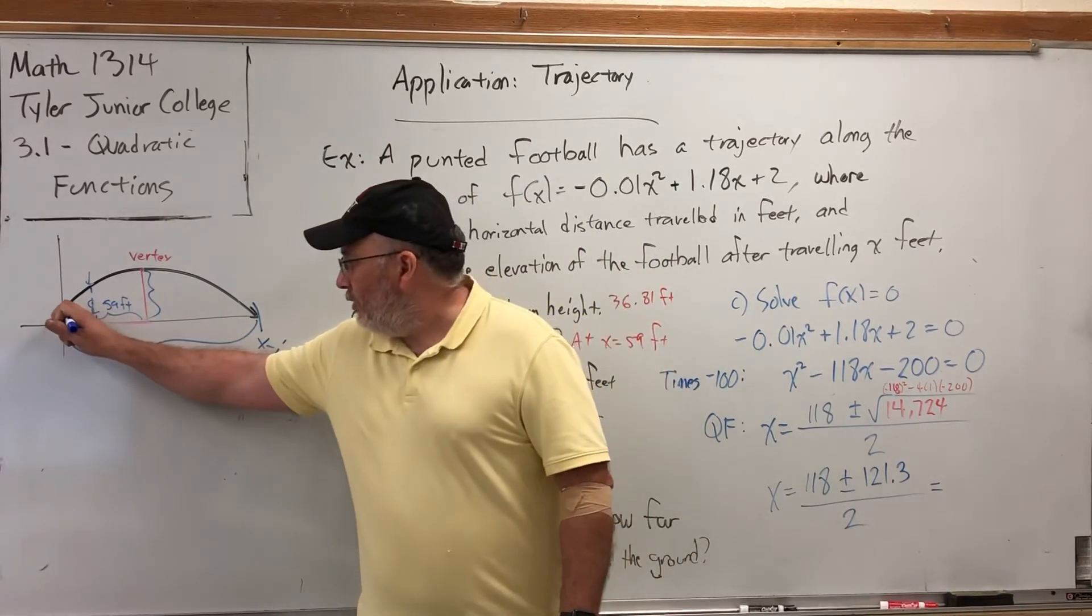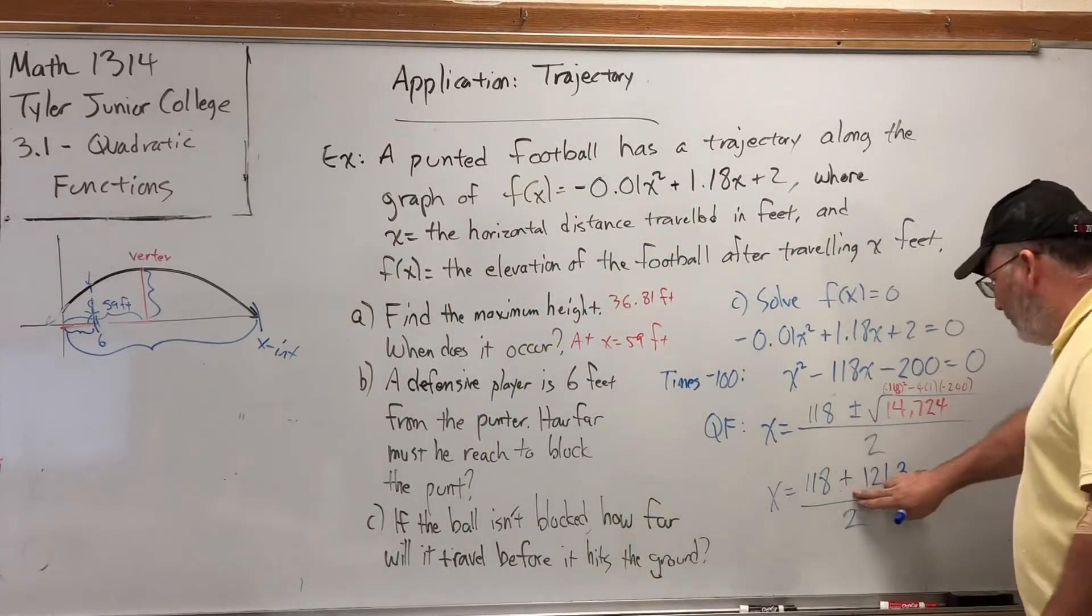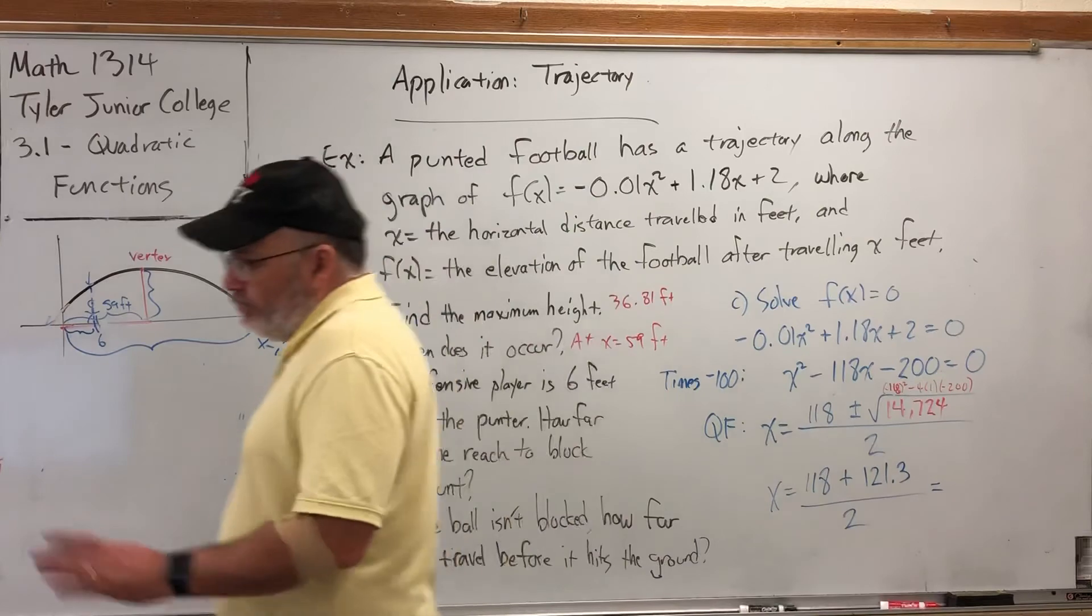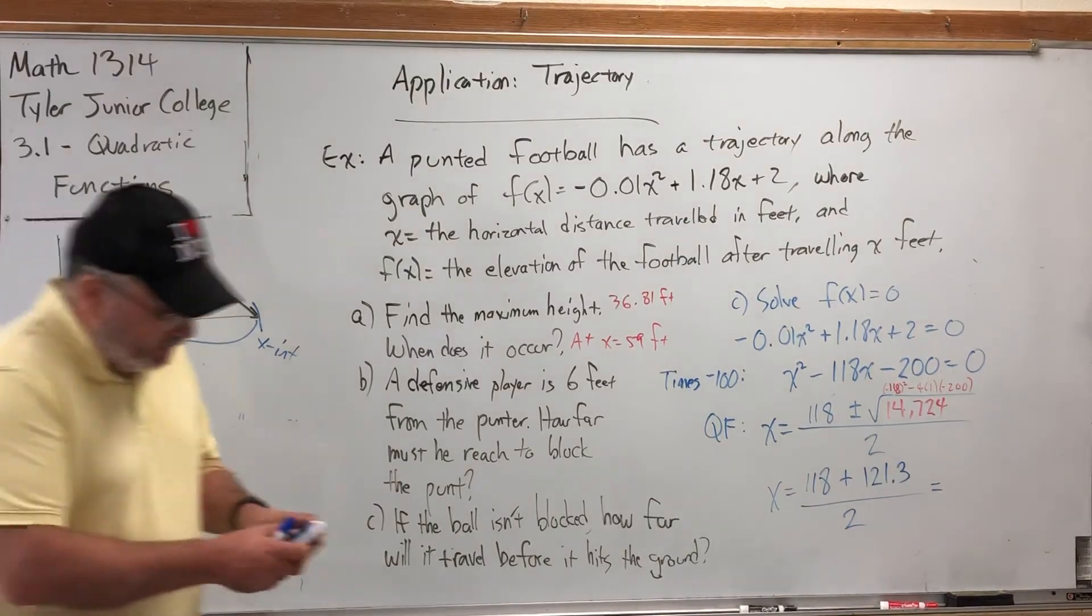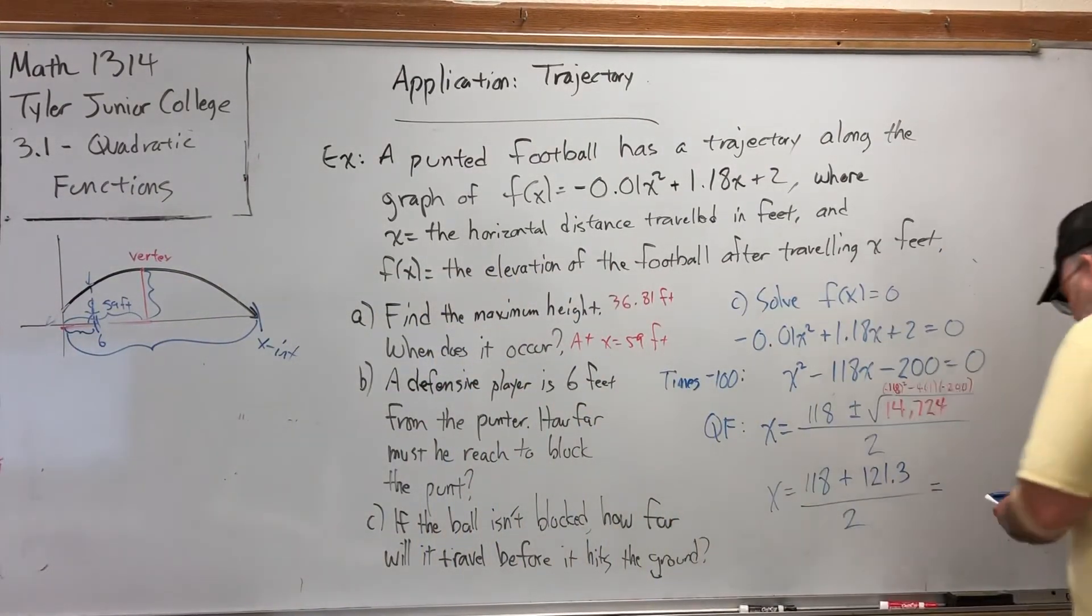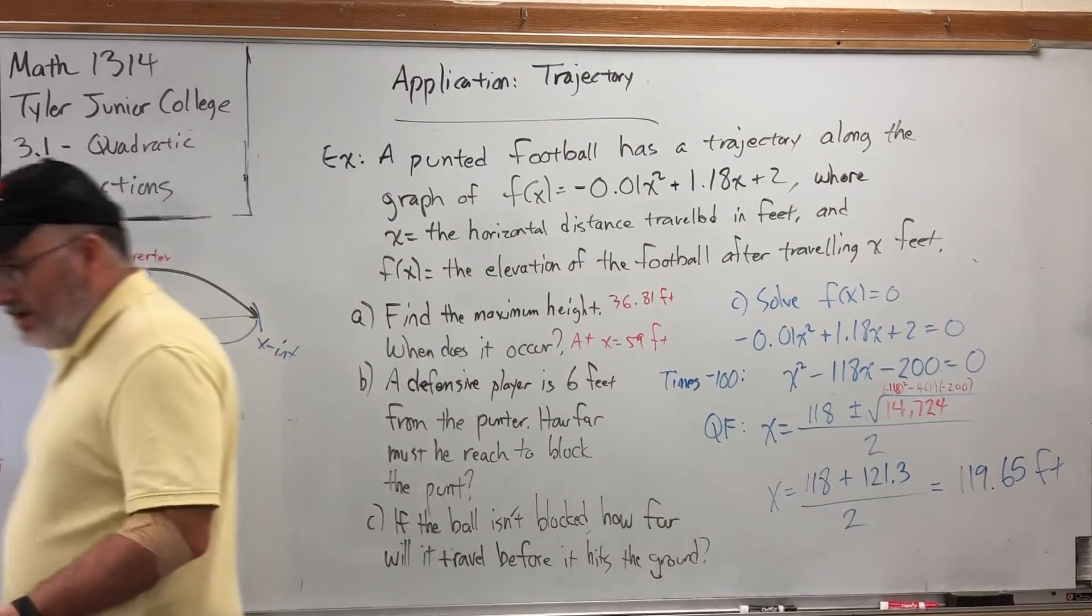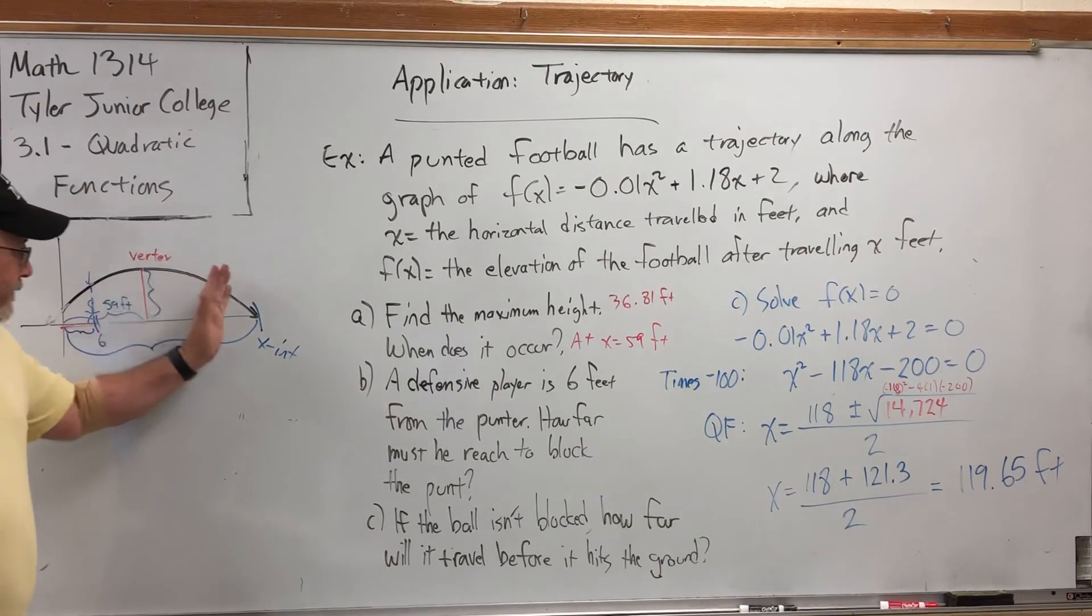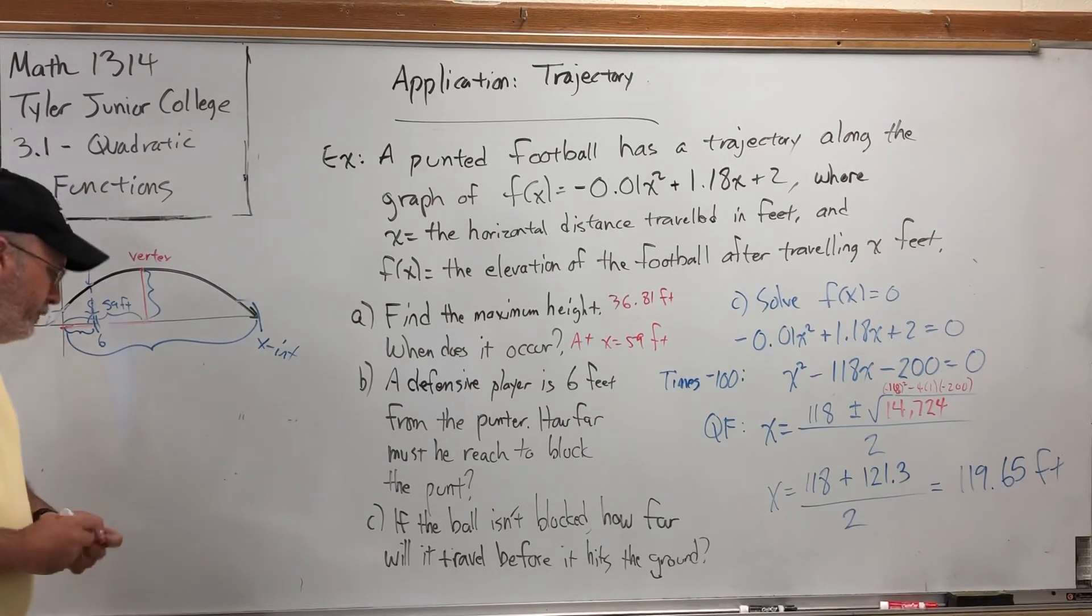So really all I have to worry about here is the plus. Now you can't always just say, don't do the minus when it's an application. In this application, the minus gives an answer that doesn't make sense. In some applications, they both might make sense. Or in some applications, the minus answer might make sense, but the plus answer might not. Divide that by two, we get about, well, the answer to this is 119.65. So as I predicted earlier, it was a little bit more than 118 because it traveled 59 feet to the vertex, another 59 feet until it was the same distance off the ground, and it looks like about a foot and a half further.